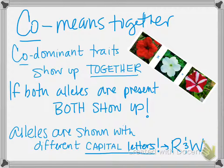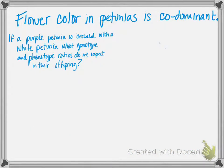These alleles are shown with two different capital letters. In this case, looking at these petunias here, we'd probably use an R and a W for the red and the white parents. Can you guess what the genotype of the offspring would be? Flower color in petunias is codominant.